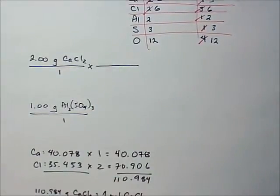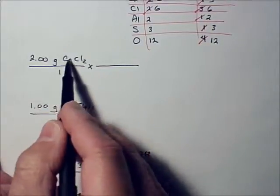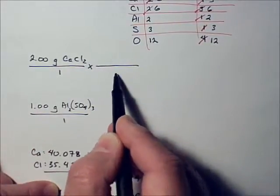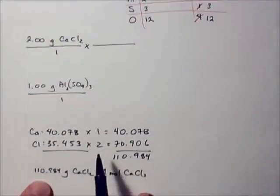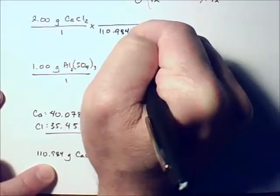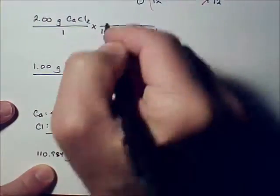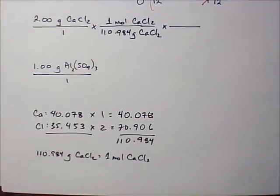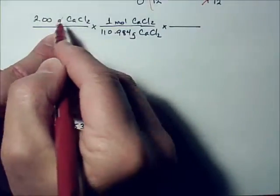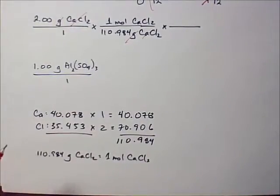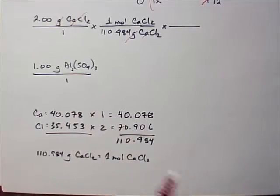Okay. So now that I have this, I can take and put the number that has matching units and species with what's right here. So if I have units of grams and species of calcium chloride on the top here, I want grams and calcium chloride on the bottom here. And this side of the equality statement has that matching set of units and species. So we have 110.984 grams of calcium chloride. And on the other side is one mole of calcium chloride.